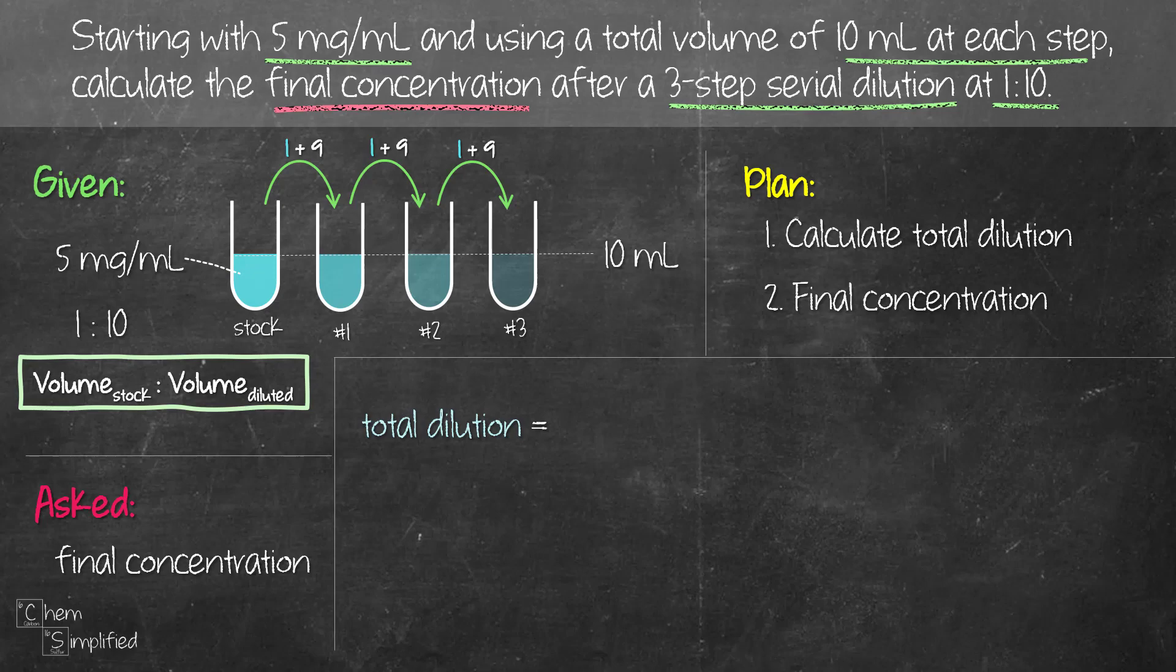We need the dilution factor. The first test tube, we're doing a dilution factor of 1 to 10 because we take 1 mL of the stock and dilute it to a total of 10 mL. So that's how we got the 1 to 10 ratio.